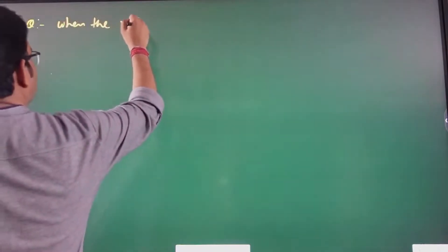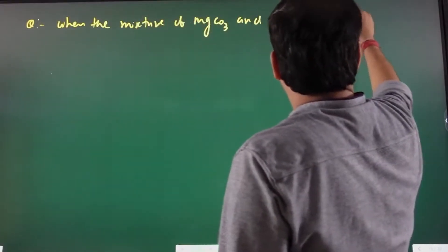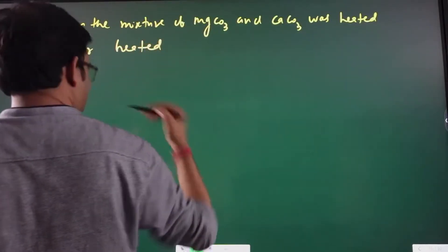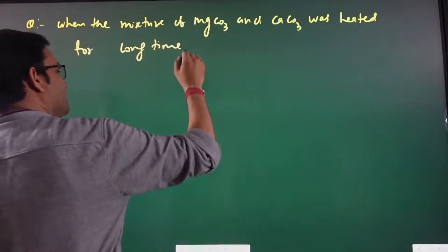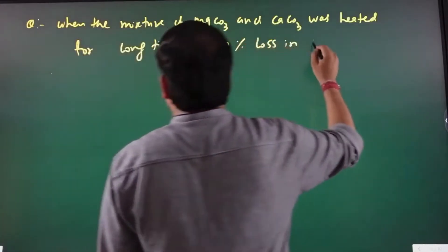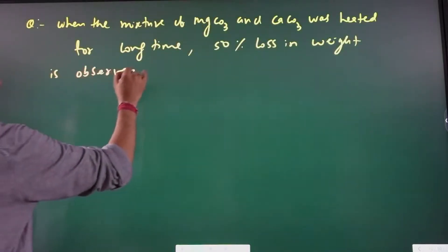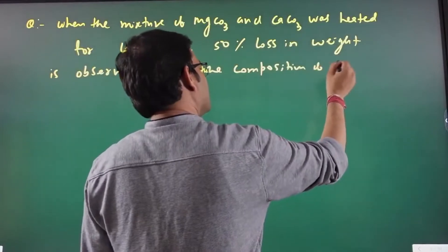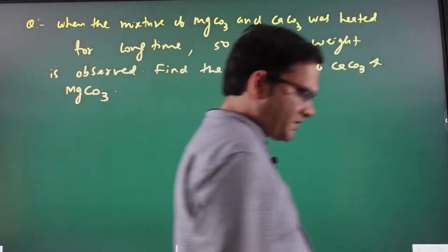When a mixture of MgCO3 and CaCO3 was heated for a long time, 50 percent loss in weight is observed. Find the composition of CaCO3 and MgCO3.